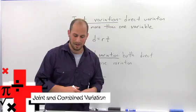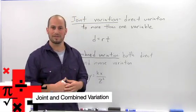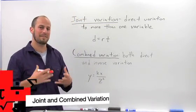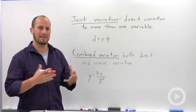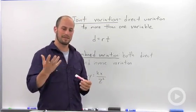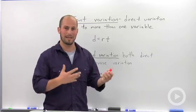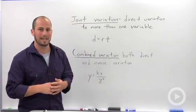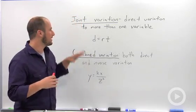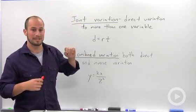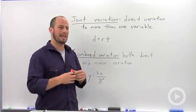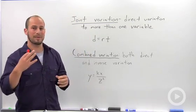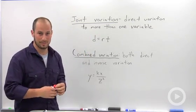Sometimes there are equations or circumstances where you actually have things that vary in more than one element. An example of that is joint variation, where we actually have a direct variation with two variables.